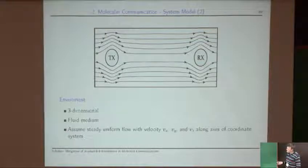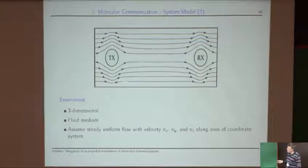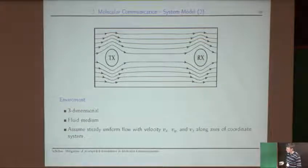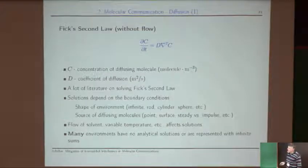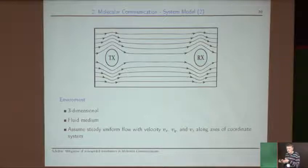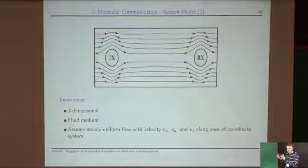For the environment, we assume a three-dimensional space with diffusion and possibly flow. The flow is the simplest possible — uniform flow with fixed velocities in each direction — as opposed to laminar or turbulent flow, which would be more difficult to model. The symbol period is the time between when the transmitter sends the next pulse. The information is encoded in the amplitude — pulse or no pulse — not in the time difference.